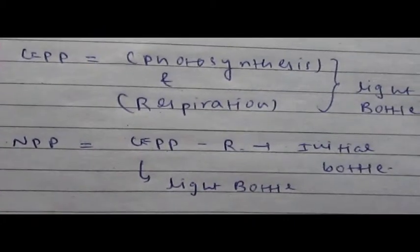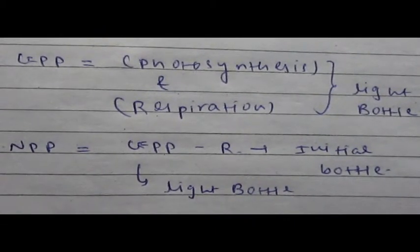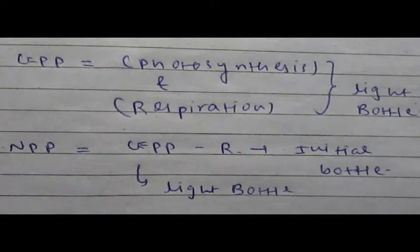Net primary production, NPP, is GPP minus R. GPP, the gross primary production, occurs in light bottle and respiration, more or less amount due to the presence of microbes and microflora, green algae and some of the phytoplanktons and zooplanktons.